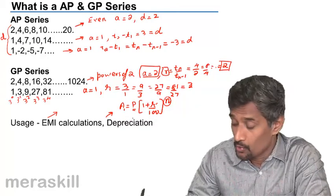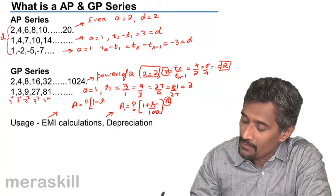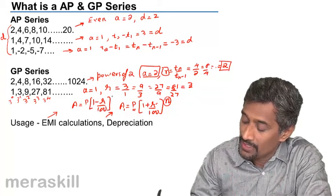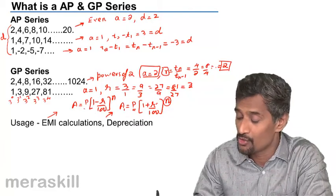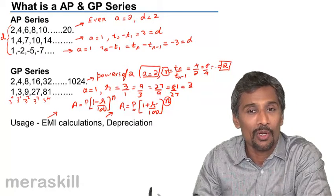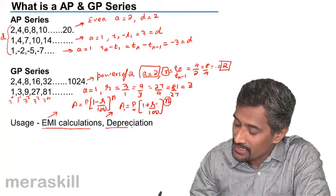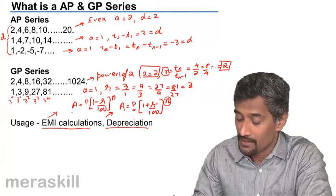For depreciation, it is P into 1 minus R by 100, the whole raised to n. Even here, the ratio of A2 to A1, A3 to A2, is going to be 1 minus R upon 100.